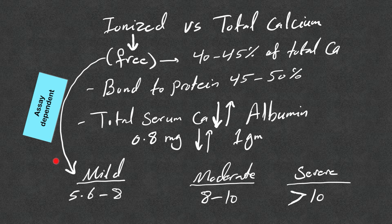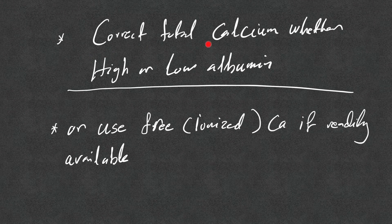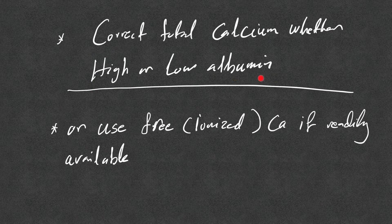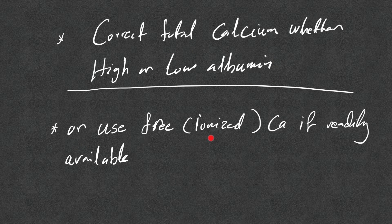Your facility may use a different assay that uses different numbers, so pay attention to that. Again, correct total calcium for albumin whether high or low albumin. Some people only correct if low albumin, or again use free ionized calcium if readily available at your facility.